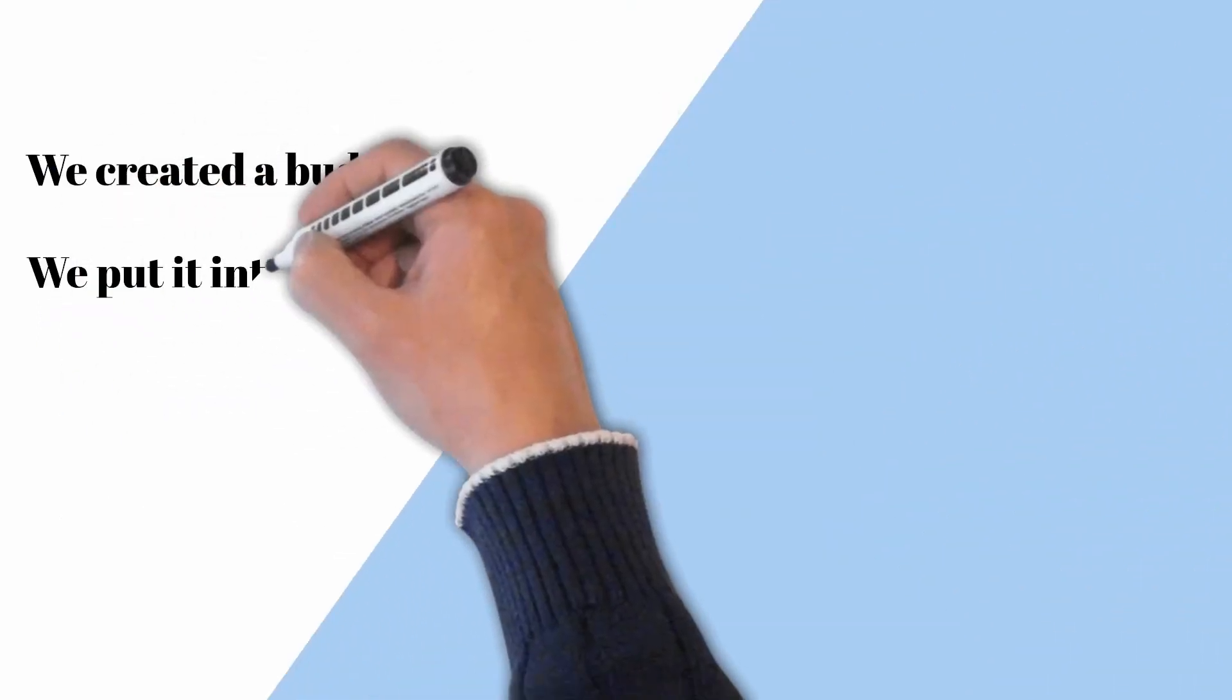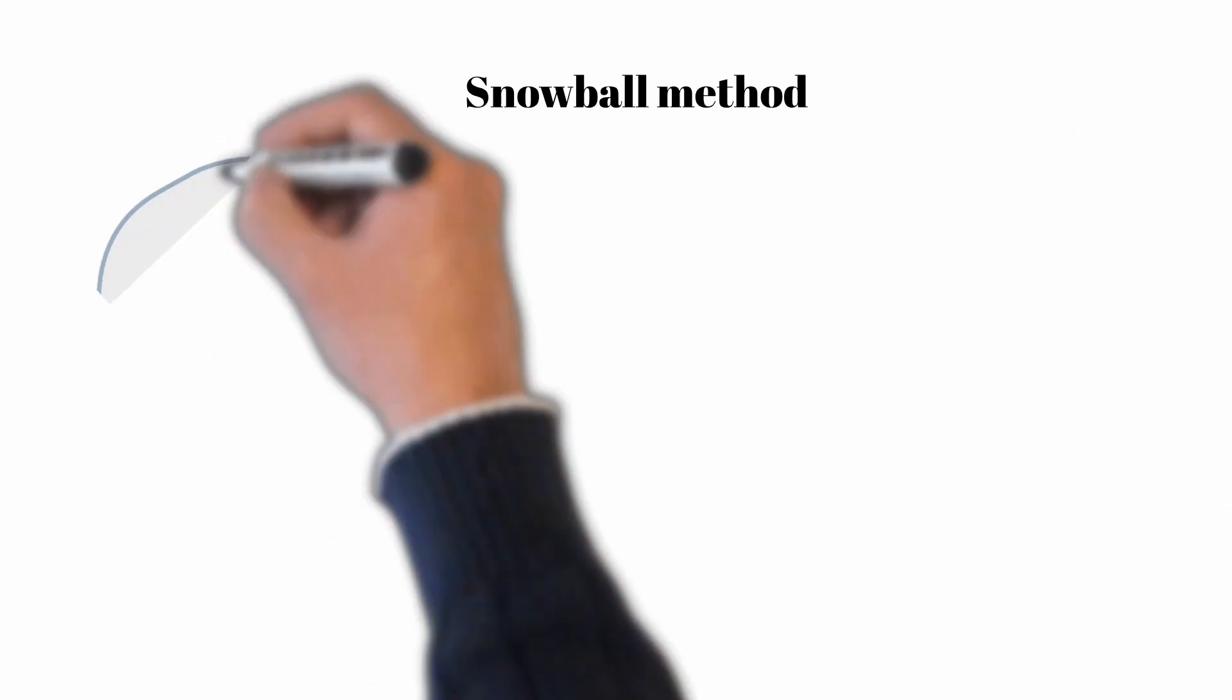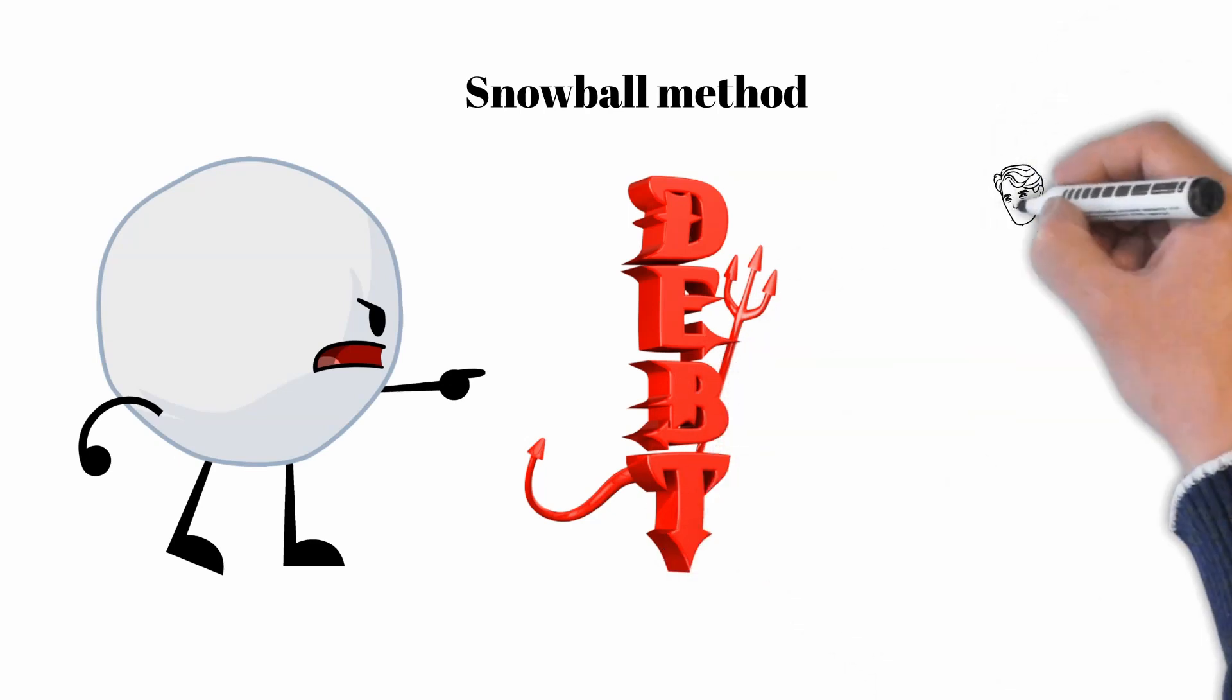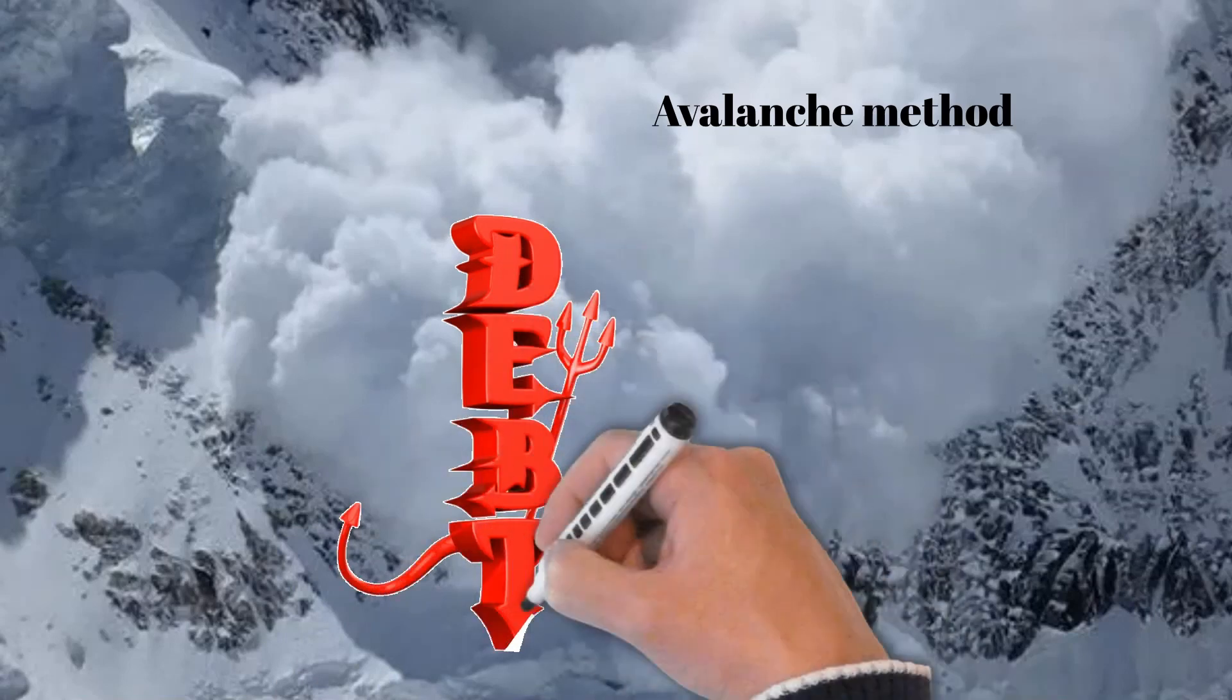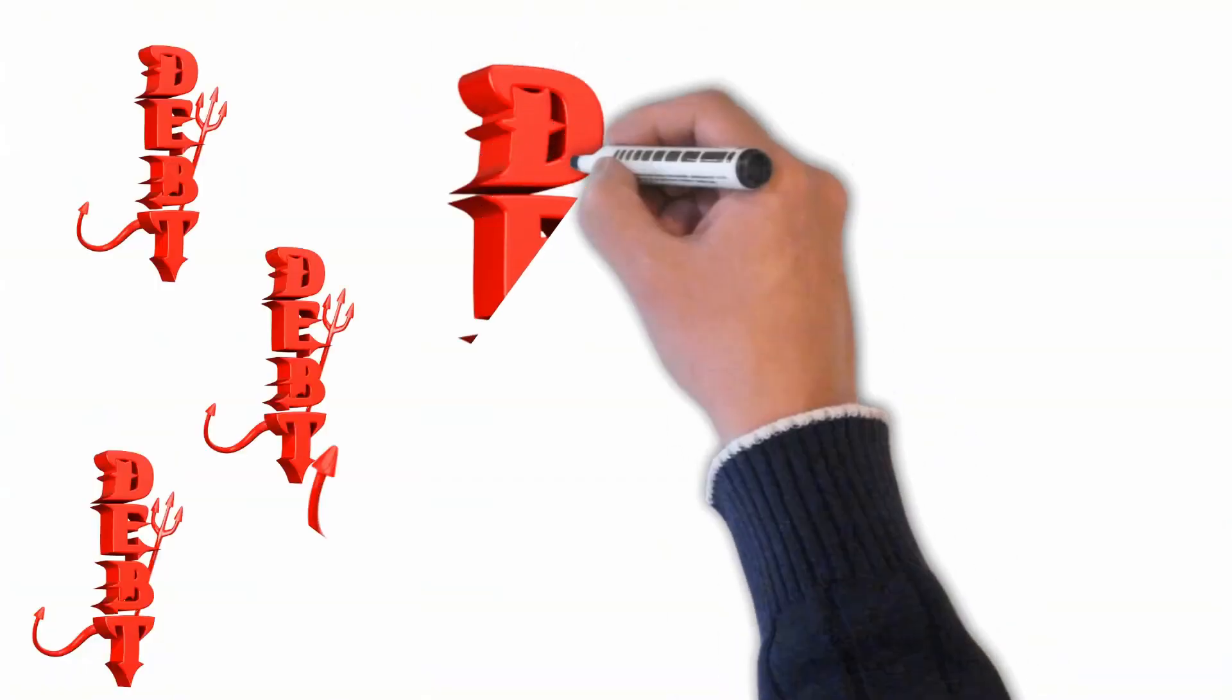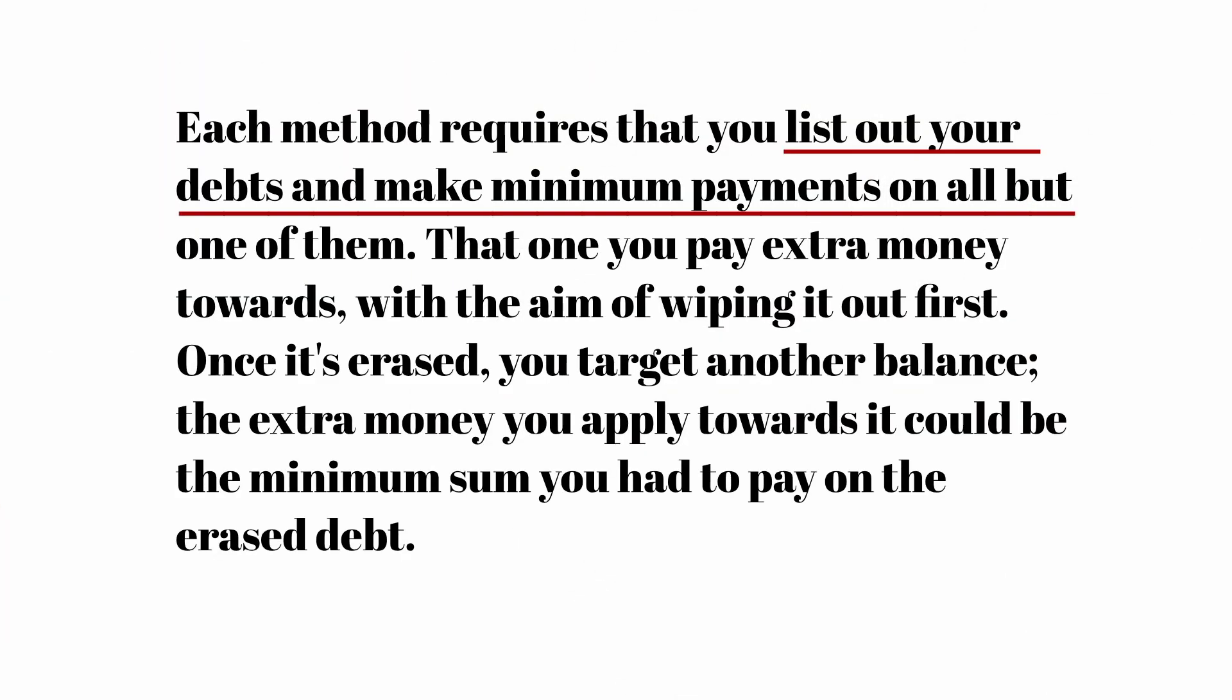Now that we looked at generating extra money, we need to prioritize the repayments of debt. There are two main ways to repay our debts, meaning the avalanche and the snowball methods. Each method requires that you list out your debts and make minimum payments on all but one of them. That one you pay extra money towards, with the aim of wiping it out first. Once it's erased, you target another balance. The extra money you applied towards it could be the minimum sum you had to pay on the erased debt. The two strategies diverge over which debt you single out first.